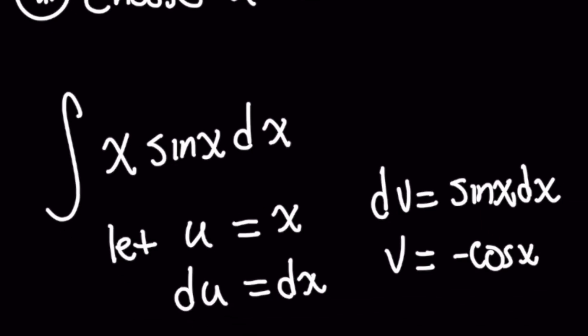So by choosing x as my u here now you take the derivative of both sides of this equation with respect to the variable. On the left hand side the derivative will be du because it just becomes one. On the right hand side similarly the derivative of x with respect to x just gives you this differential dx.